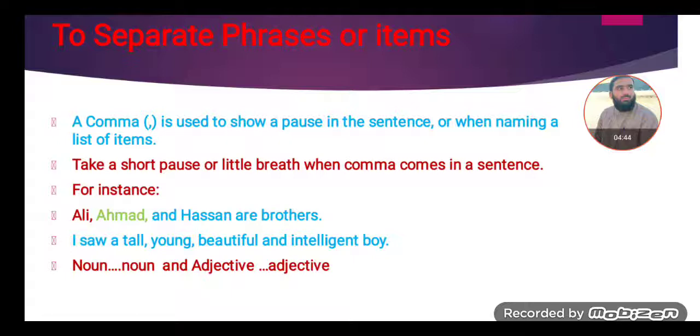And in the second sentence, tall, young, beautiful and intelligent, these words are adjectives. So these adjectives are separated, a distinction is there with the help of comma among the adjectives.